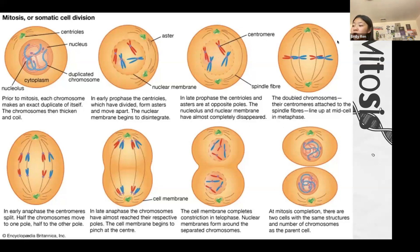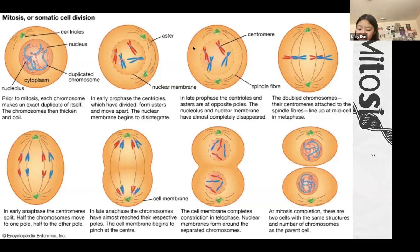Mitosis is the process of division of the nucleus — it is not cell division; cell division happens right after. There are four or five phases: prophase, metaphase, anaphase, and telophase, followed by cytokinesis. In prophase, the nuclear envelope and nucleolus disappear, chromosomes condense and become visible, and the mitotic spindle begins to form. The mitotic spindle, consisting of microtubules, is responsible for organizing mitosis — kinetochore microtubules attach to each sister chromatid from opposite sides.